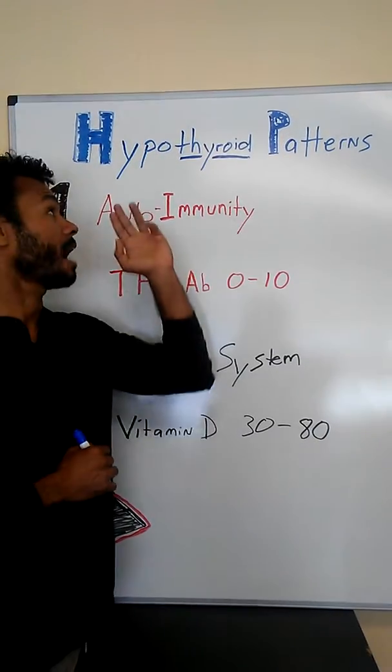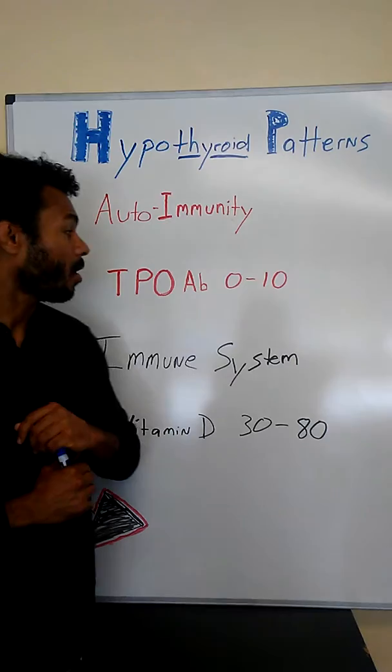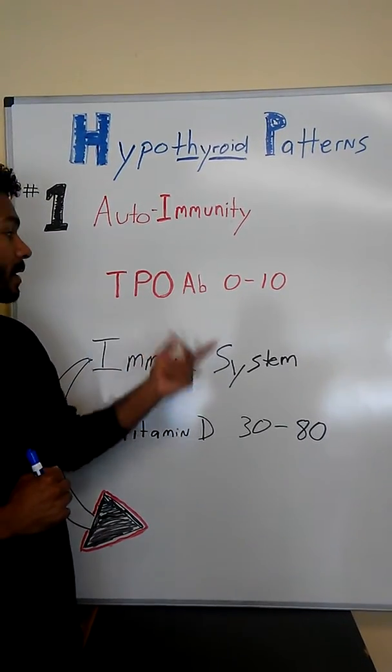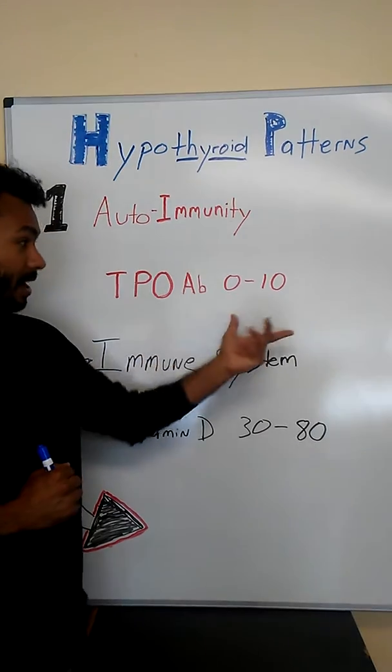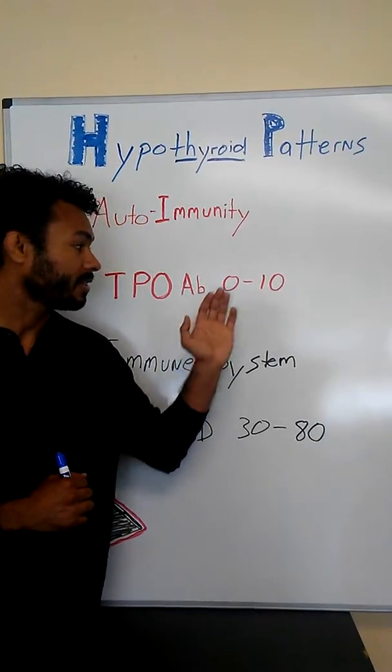This is a major cause. It's believed that half of the cases of hypothyroidism is an autoimmune condition called Hashimoto's. Now when it comes to appropriate testing, you'll want to make sure that the immune system's not obviously involved in this. So TPO antibody testing—above anything above a 10, you're starting to get an inappropriate response from the immune system.